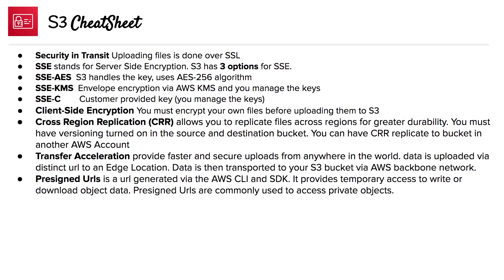Security in transit is something you have with S3 because all files uploaded are done over SSL. S3 has three options for server-side encryption (SSE). SSE-S3 means S3 handles the key itself and uses the AES-256 algorithm. SSE-KMS uses Key Management Service, which is an envelope encryption service — AWS manages the key and so do you. SSE-C is customer-provided encryption — you actually upload the key, you have full control of it, but you also have to manage it.